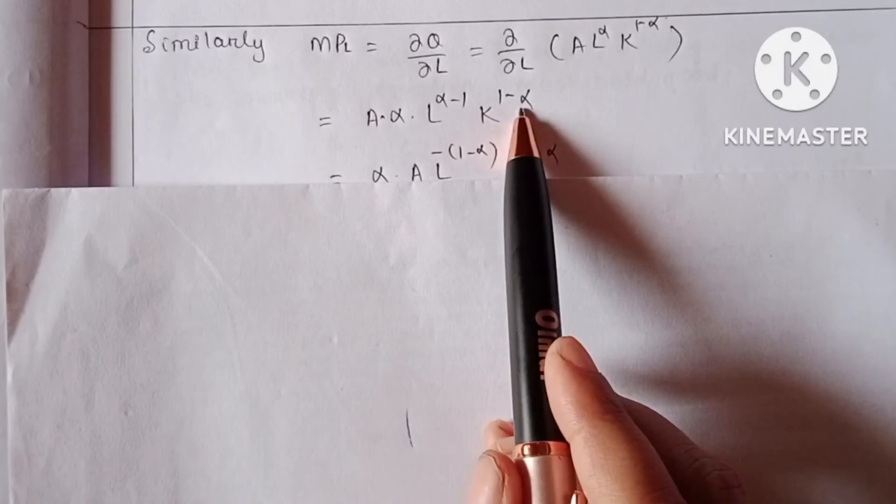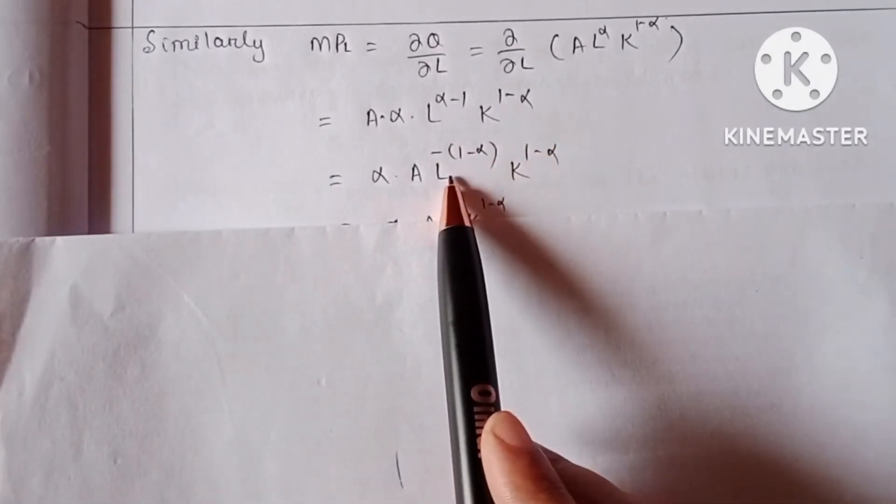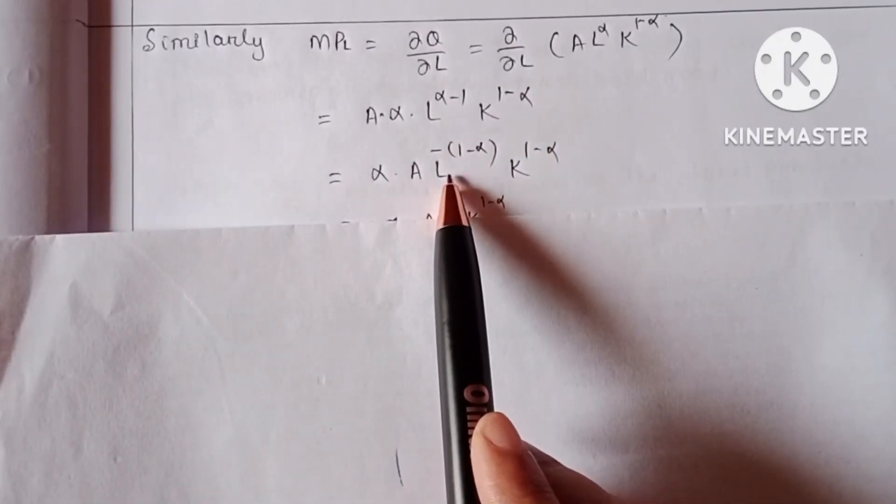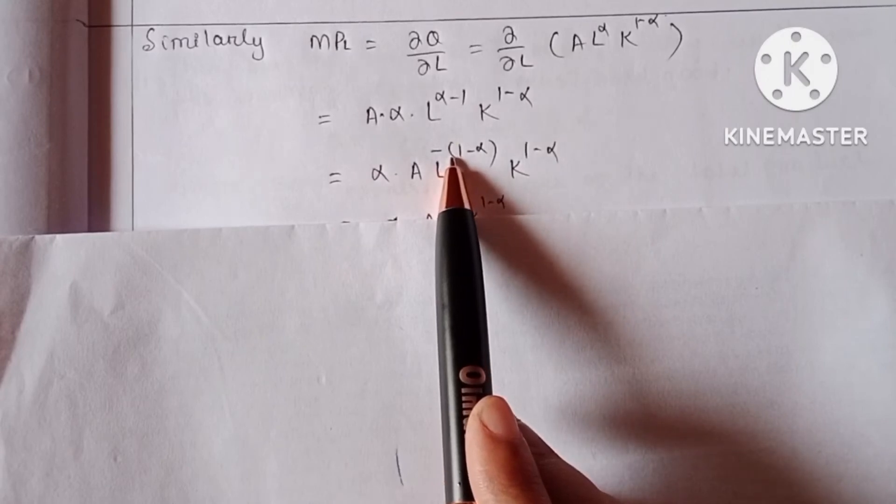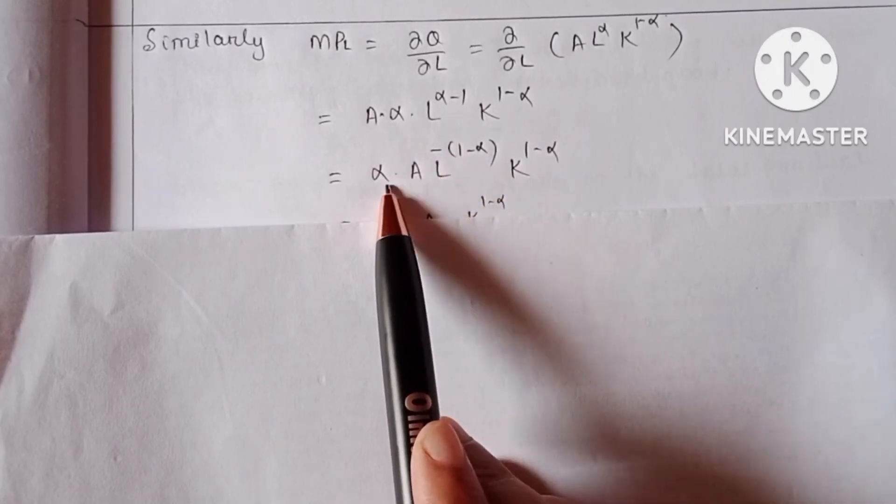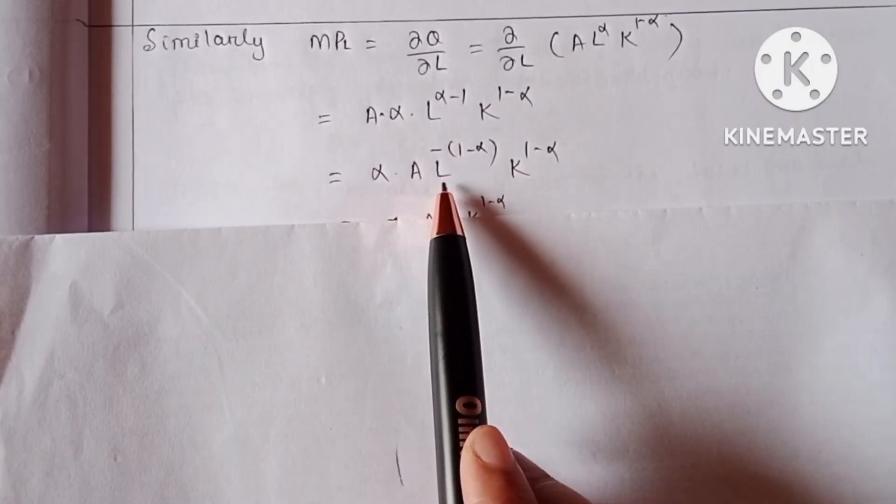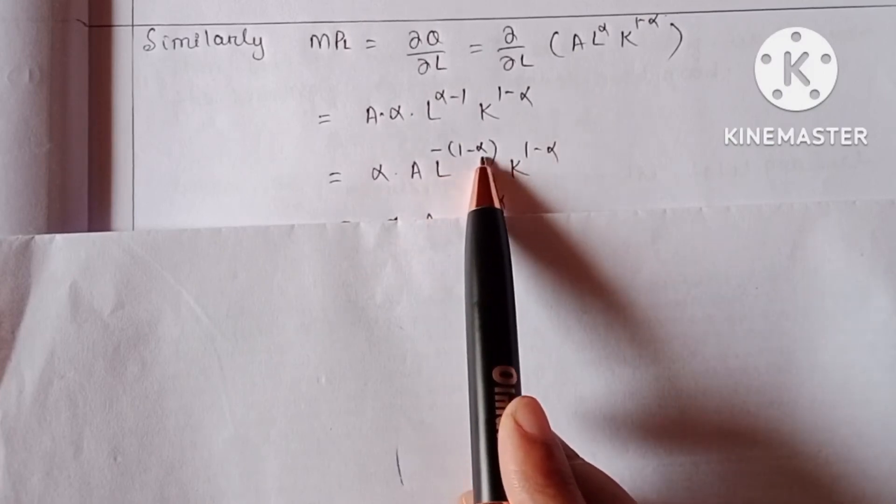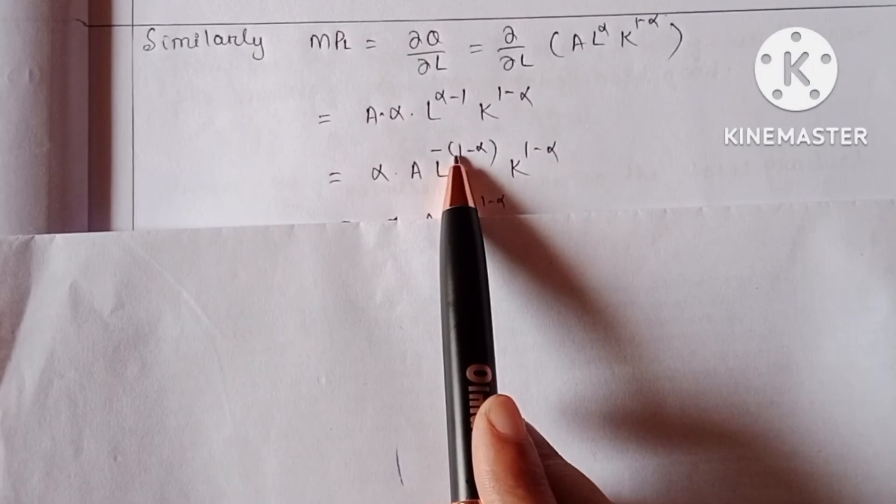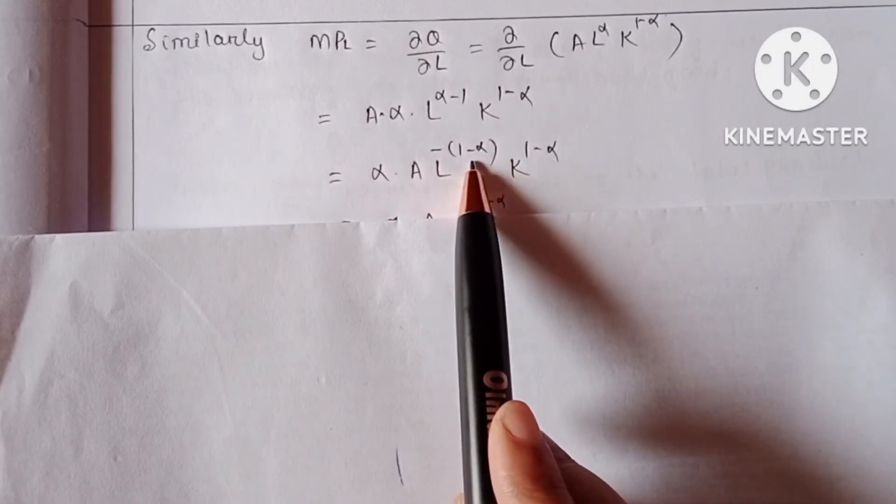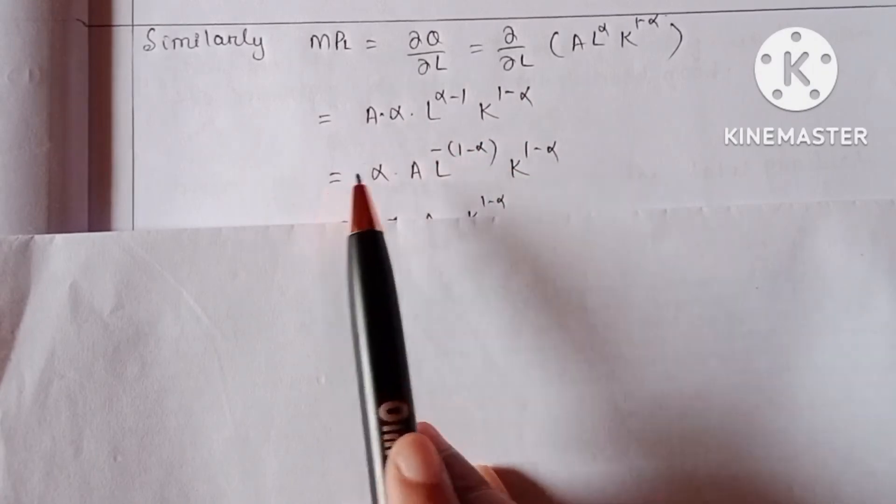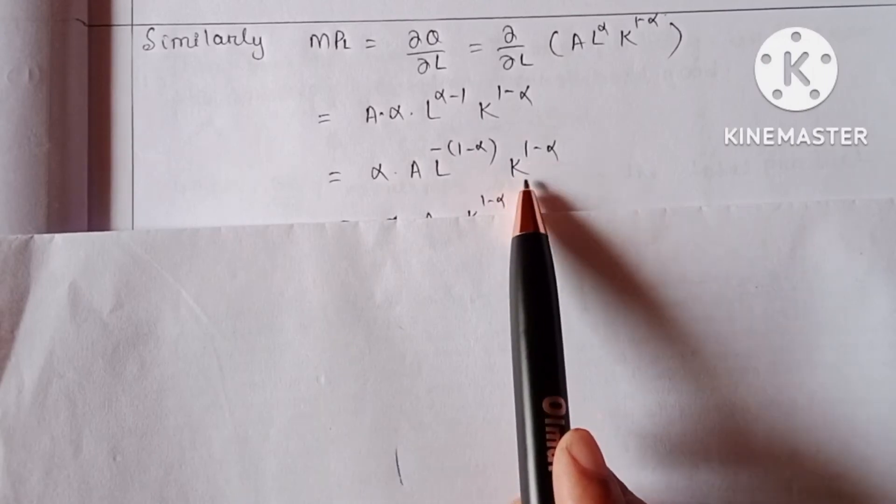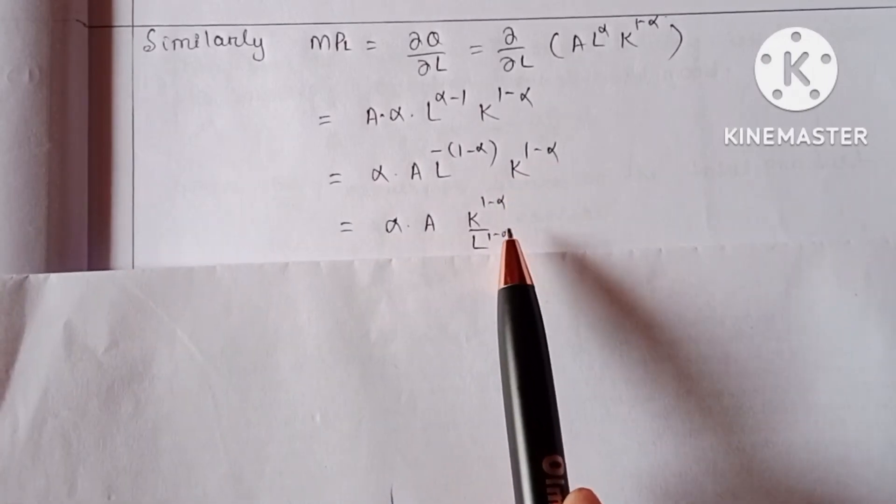If we factor out this minus 1, this becomes α·A·L^(-(1-α)), because this becomes minus 1 and minus minus becomes plus, into K^(1-α).